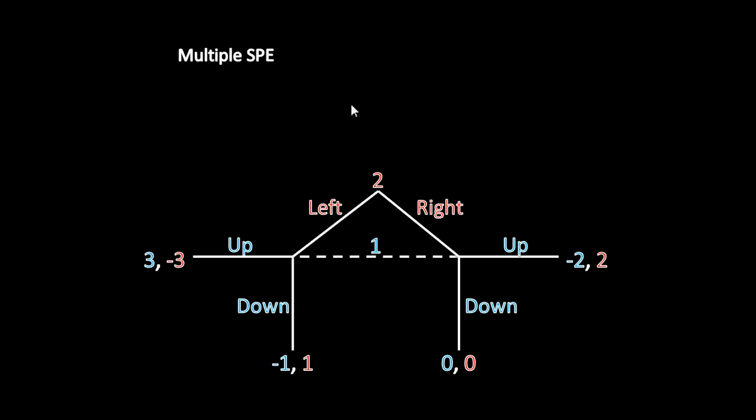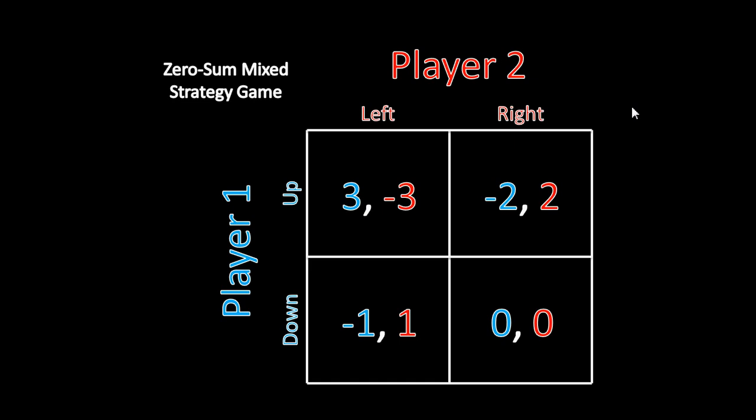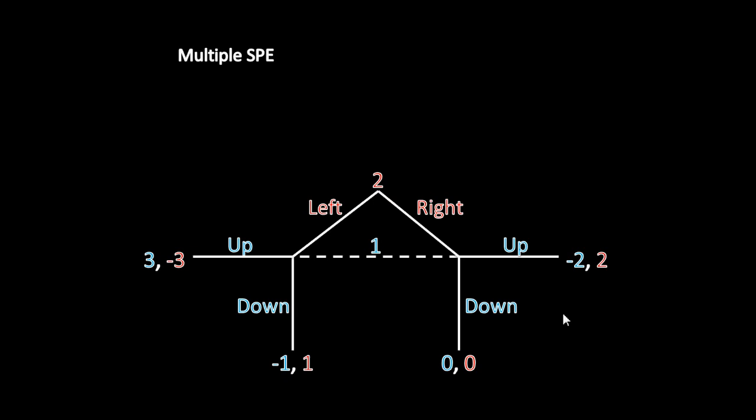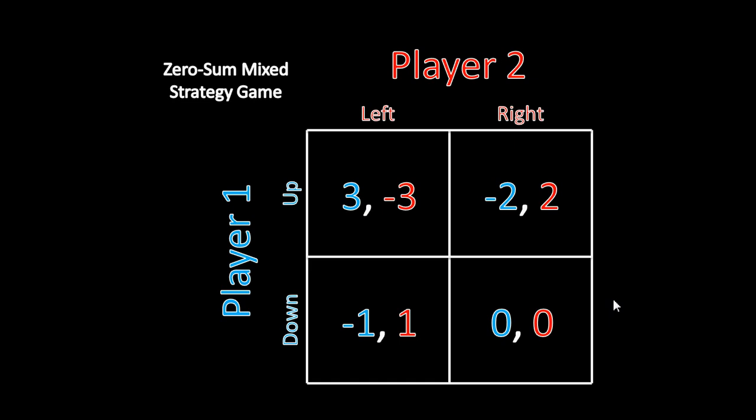We've actually seen this game before. If we take these moves and put them into a strategic form game, we get this — and this is the zero-sum mixed strategy game that we looked at way back when we were looking at the mixed strategy algorithm. Player 2 still has the same moves left and right, and Player 1 has the same moves up and down, and all of these payoffs correspond to what we saw over here. We're going to solve this game and then use those payoffs to work our way back upward. We don't actually have to solve it because we've already done it, so I'm just going to reference what we've already done in the last unit.